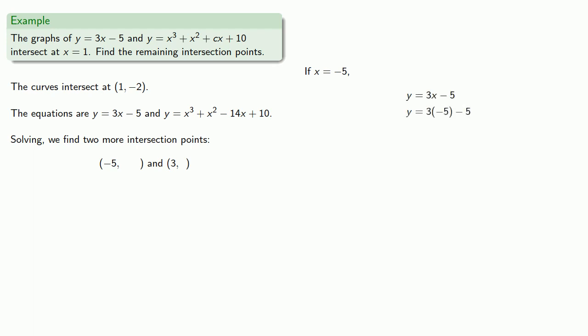And we can find our value of y, negative 20. And so that gives us (negative 5, negative 20) as another intersection point.